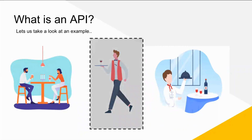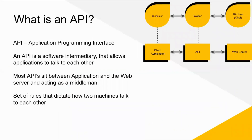Let's see technically what API means. Application Programming Interface, or API, is a software intermediary that allows applications to talk to each other. Because they act as middlemen, they usually sit between applications and the web server. An API is a messenger, just like a waiter, that takes a request, tells the system — which is the kitchen — and then returns the response back to you, which is the food. Whenever you think of an API, think of it like a waiter running back and forth between applications, devices, and databases to deliver data and create connectivity.